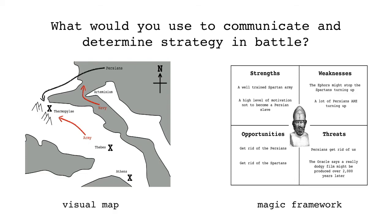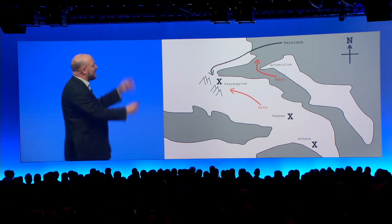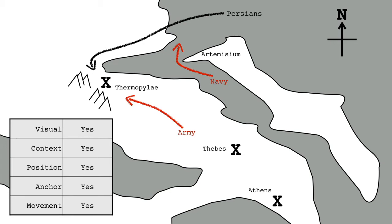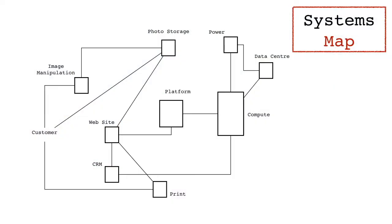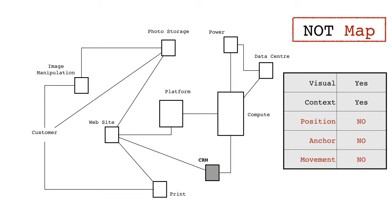Quick question: what would you use to communicate and determine strategy in battle — a visual map or a magic framework? Map. What do we use in business? Magic framework. So, this was my problem. I was thinking, what is it so special about a map that makes it useful for strategy? Maps have certain characteristics: they're visual, they're context-specific, you have the position of pieces, you have an anchor like the compass — so this is north or south of this — and you have consistency of movement. The problem is people would say, we have maps — systems maps. But if I take something from a systems map like CRM and move it over here, how does that change the map? It doesn't. If I shift Australia on an atlas and put it next to San Francisco, does that change the map? Yes. The problem is systems maps aren't actually maps. Most of the things we call maps in business aren't maps — business process maps, mind maps, none of them. It's almost as if we keep using that word and it does not mean what we think it means.